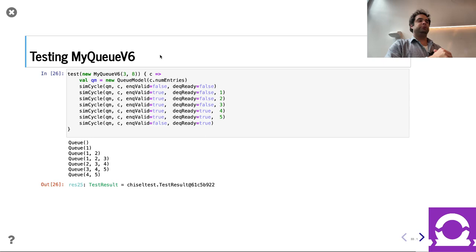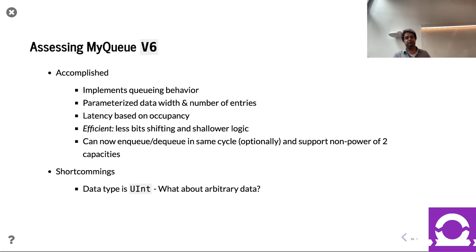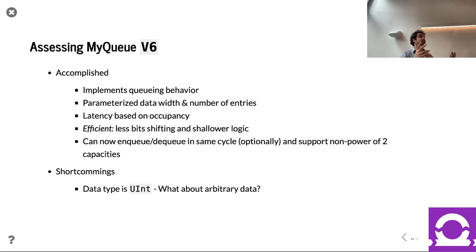Is that it? We're all done for sure? Anything people can imagine wanting from a queue that we don't have right now? We've done a lot of things: we have a queue, parameterized number of entries, parameterized data width, latency based on occupancy, data staying in place — efficient power-wise, can enqueue and dequeue the same cycle based on the pipe parameter, and we support non-power-of-two capacities. Those are all awesome accomplishments. What's missing? We're assuming you have a UInt — perhaps you have a bundle or something else. So we'll cover generics in a later lecture. That's a pretty small shortcoming.